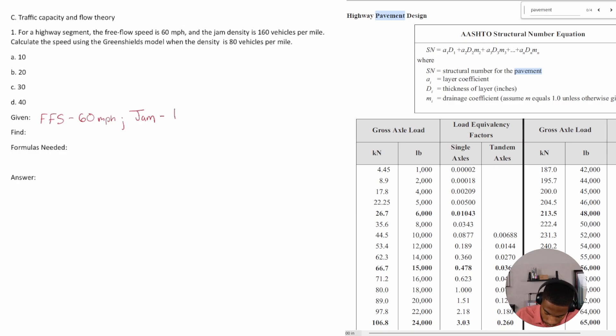And that is 160 vehicles per mile. And we know that the regular density is 80 vehicles per mile.